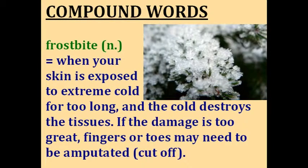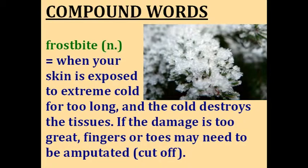Frostbite. The word frost refers to tiny ice crystals — like you can see in the picture, a tree covered with tiny crystals of ice. The word bite means to cut something with your teeth. Ice doesn't have teeth, but if you put the two together, you get frostbite. Frostbite is an injury — it's when your skin is exposed to extreme cold for too long and the cold destroys the tissues. Your fingers might turn blue or even black. Sometimes people with frostbite have to have their fingers or toes amputated because the damage is too great.